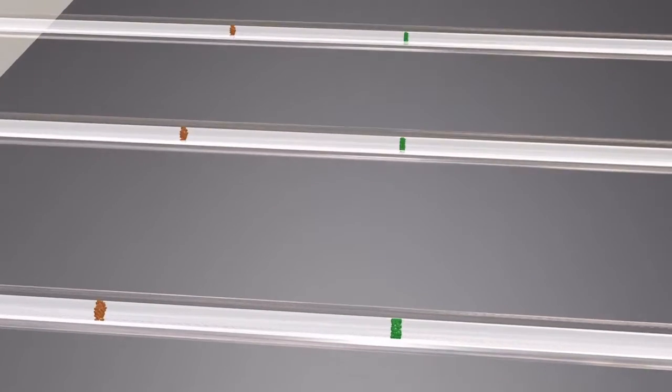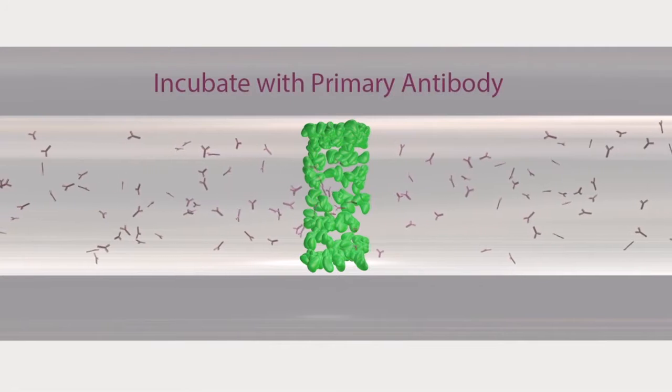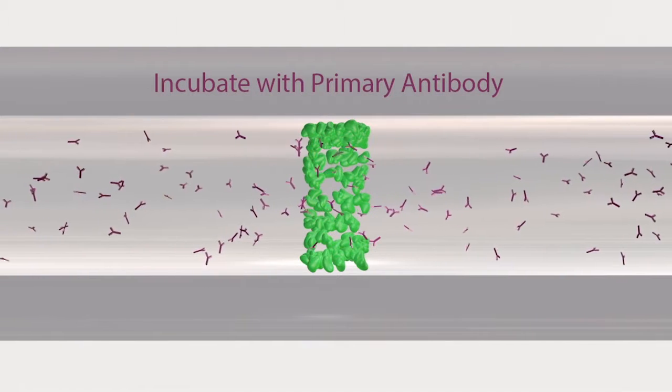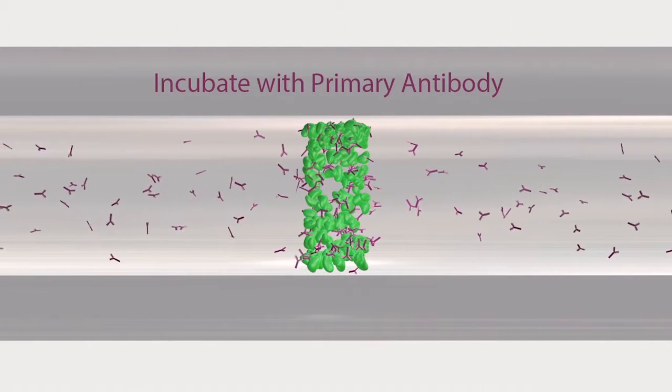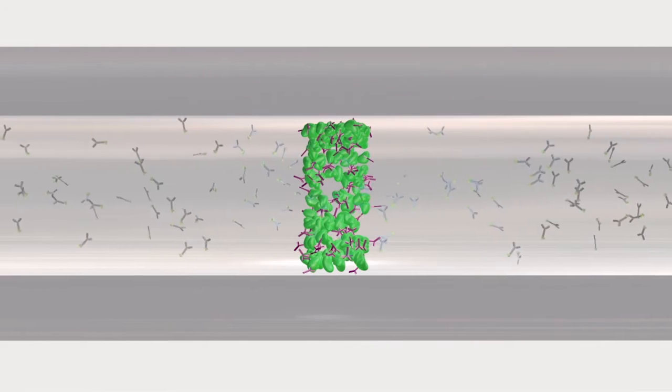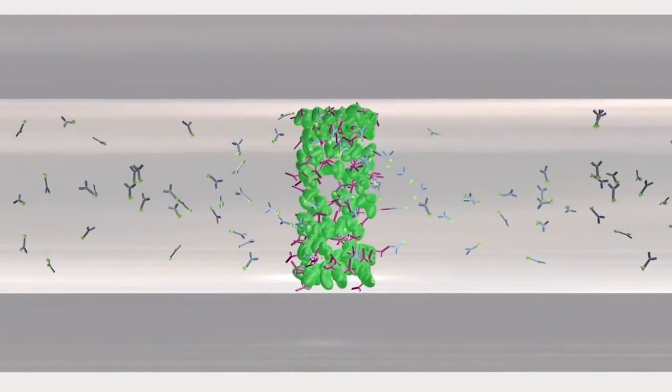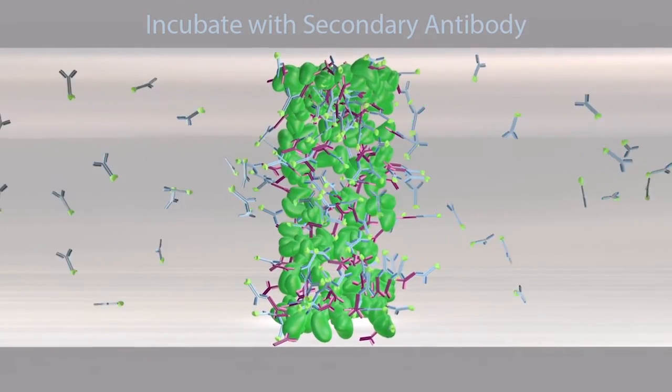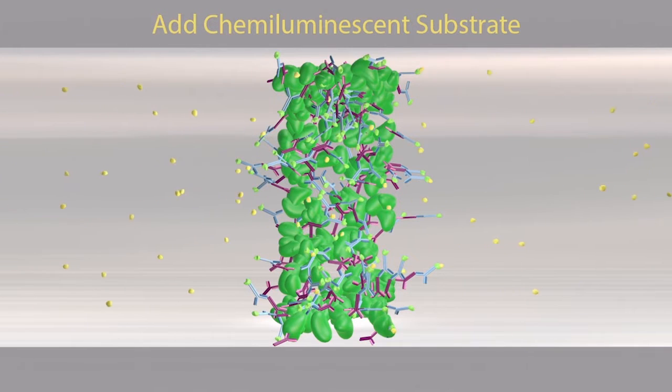This allows Sally Sue to perform an immunoassay within the capillary by first incubating with primary antibody, and then an HRP conjugated secondary antibody, followed by a chemiluminescent substrate.